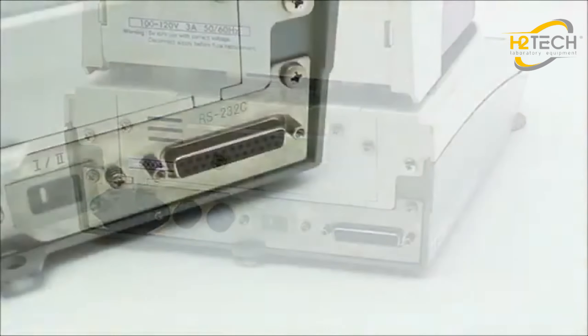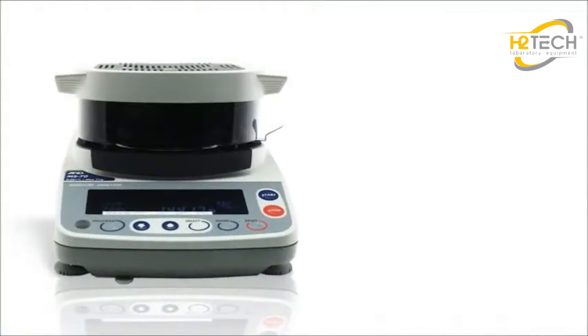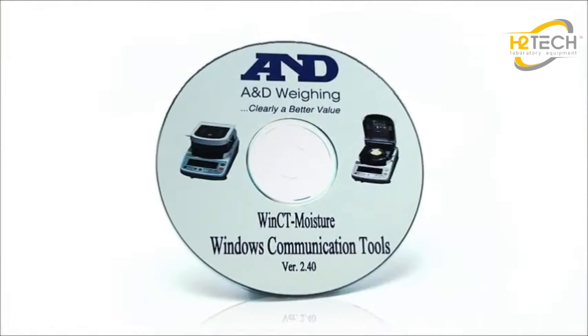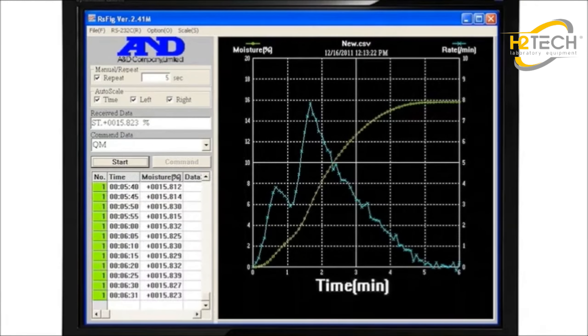Computer control and data export are easy with built-in RS-232. With the MS-70 and MX-50, you also get A&D's WinCT Moisture Software, which displays both moisture and moisture rate changes over time.